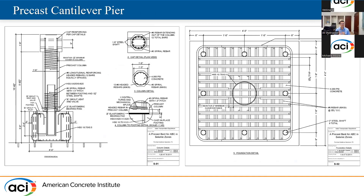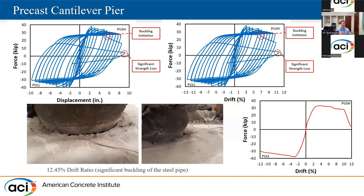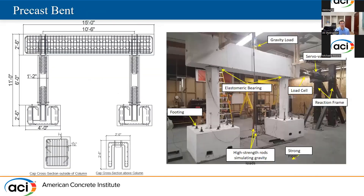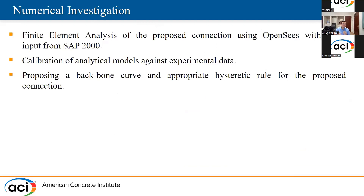We did the exact same test, but this time with a precast pier using the pipe connection. We chose the pipe size in a way that we would have almost the same capacity as cast-in-place. Here is the result for the precast pier — at a drift of 12 percent, there is buckling on the bottom side of the pipe. In the force-displacement, you can see that in the last loop there is a significant strength loss that exactly represents the buckling in the pipe. After testing the precast and cast-in-place pier or column, we did the test on the cast-in-place bent and precast bent, and now it's a good time to move forward to the numerical investigation.